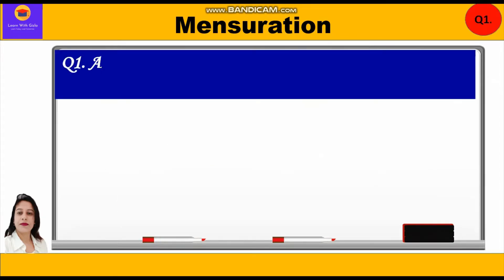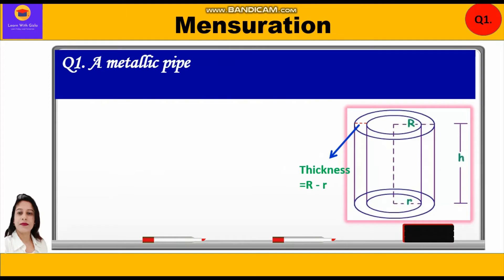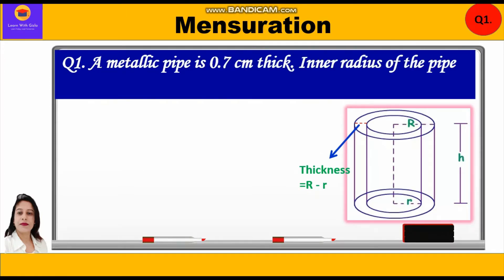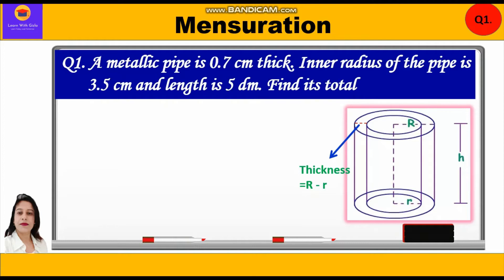Let us take up Question 1. A metallic pipe is 0.7 cm thick. Inner radius of the pipe is 3.5 cm and length is 5 decimetres. Find its total surface area.